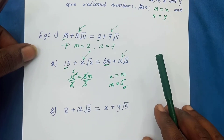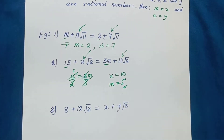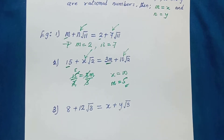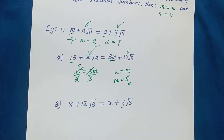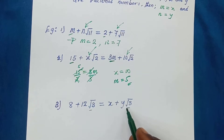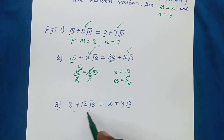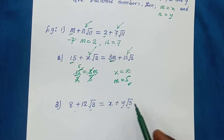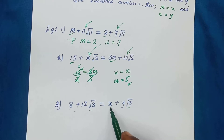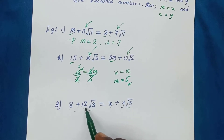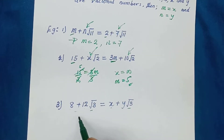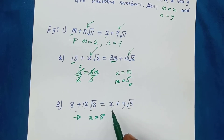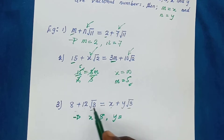Let's look at another example. Assuming we have h plus 12 root 3 is equal to x plus y root 3. You first have to check the surd part — we have root 3 here and root 3 here, they are equal. So for these two expressions to be equal, the number without the surd has to match, so s is equal to 8. And the number in front of the surd also has to match, so y is equal to 12.